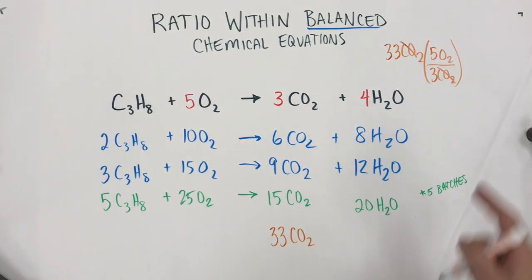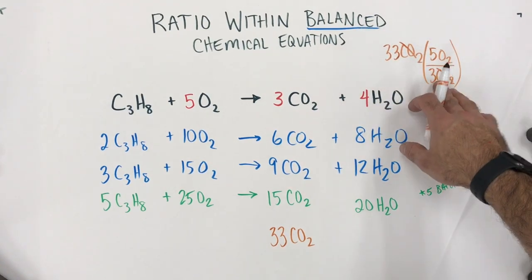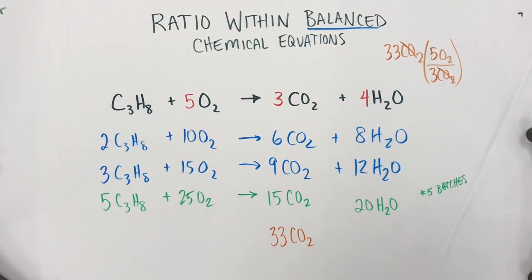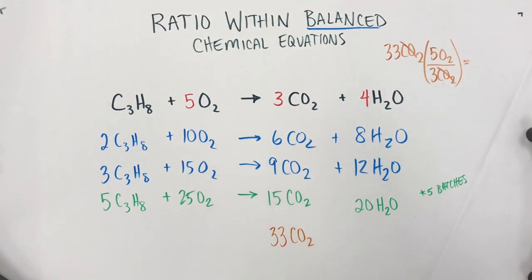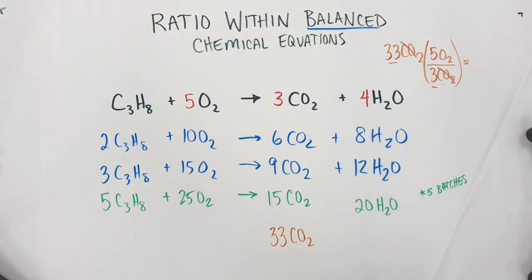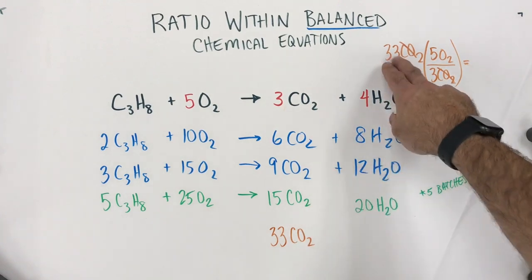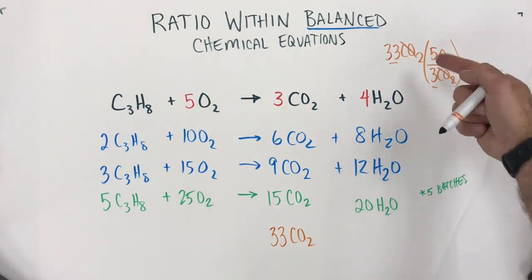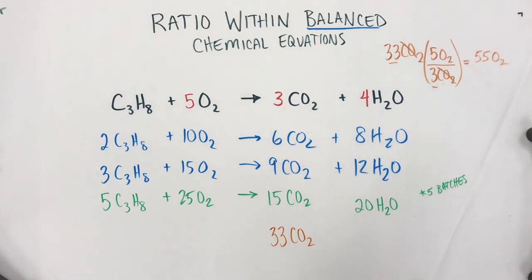Now, this sets me up to be able to calculate from the 33 carbon dioxides how many oxygens this would be. 33 times 5 divided by 3. Now, you might notice here, the 33 divided by 3 is 11. That's the number of batches for you guys that noticed that right away. So, this gives us that batch. So, the 11 times 5 then means 55 oxygen.